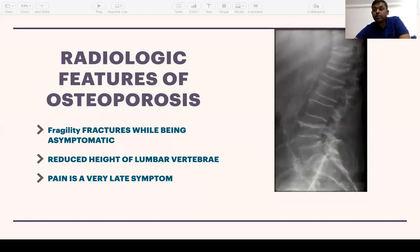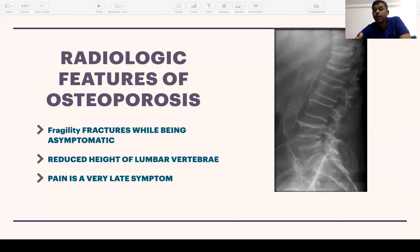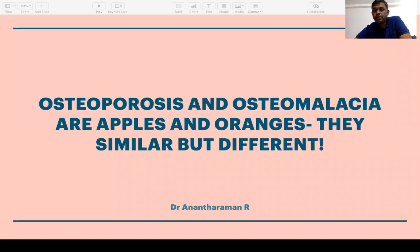On x-rays in osteoporosis, in a normal vertebral x-ray you see vertical and horizontal striations of the matrix. In osteoporosis these striations are absent, indicating that the bone matrix is reduced. Additionally, you can see that the heights of the vertebrae — for example L1 to L3 — are reduced, indicating silent compression fractures. The patient may be completely asymptomatic despite these fractures.